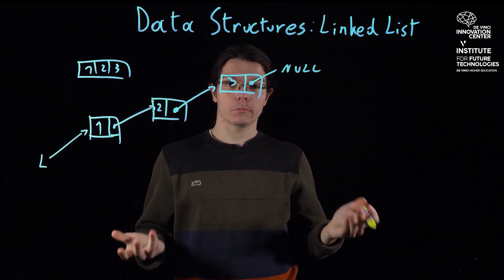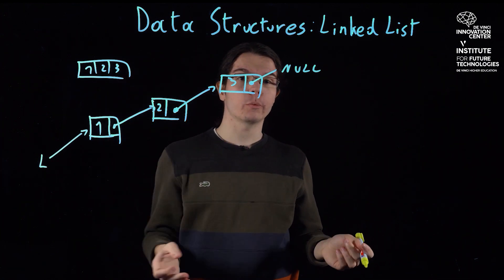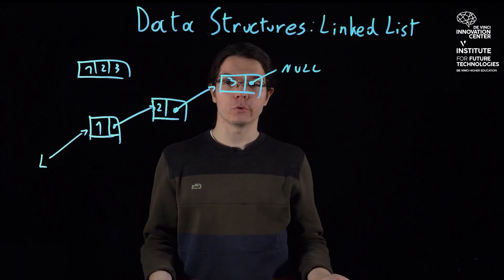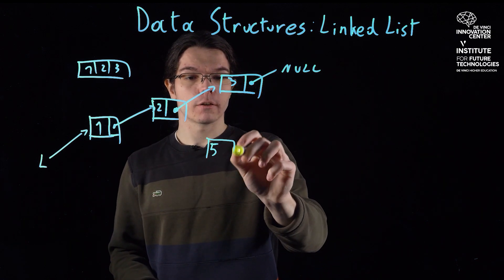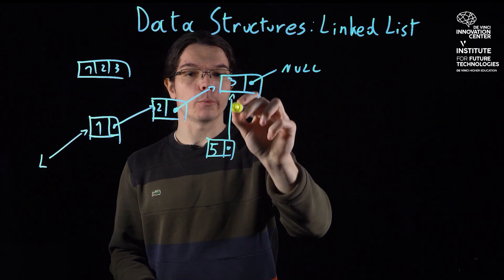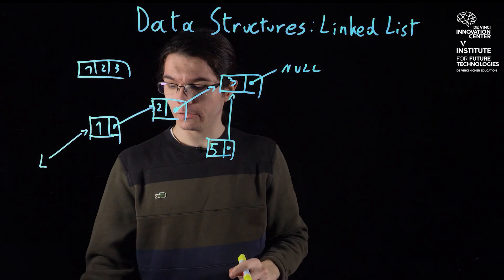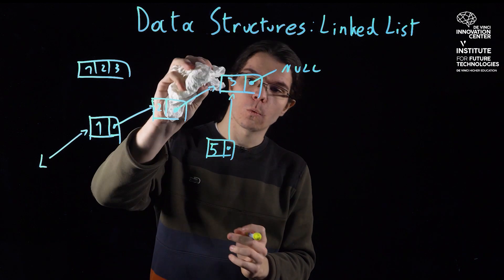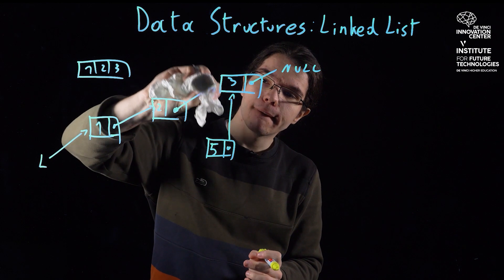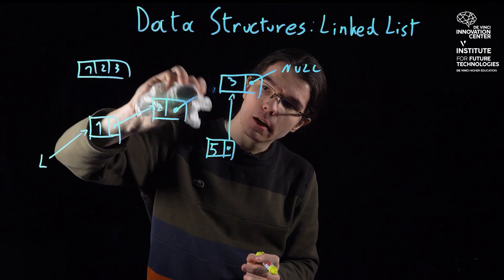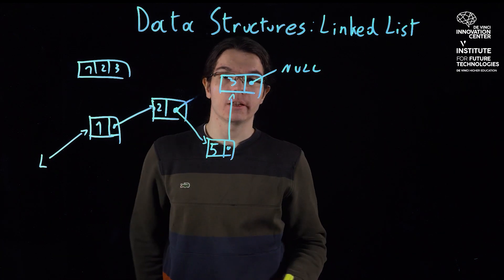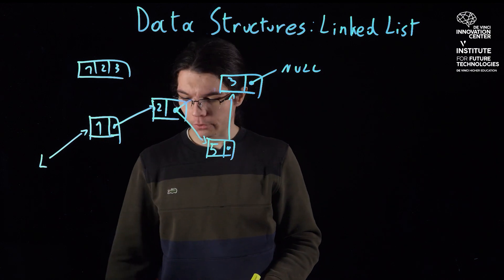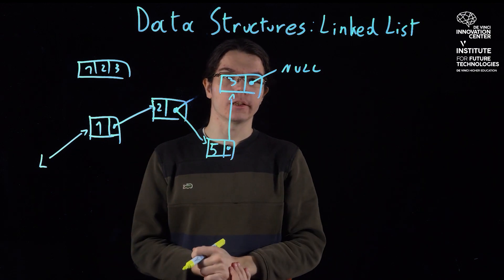Now, with this structure, how would I actually add something between 2 and 3? Let's say I want to add 5 between 2 and 3. So, I can actually just create a 5, say the next element of 5 is going to be 3, and change this value here and just make it point to 5 instead of 3. So, now I have successfully added something between 2 and 3 in my linked list.